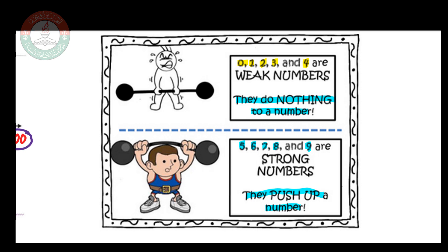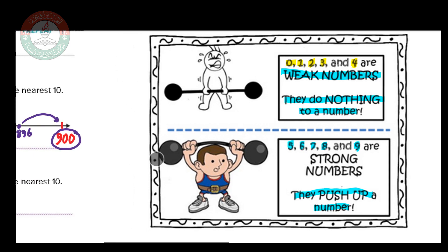To summarize: weak numbers are 0, 1, 2, 3, 4 — they do nothing. Strong numbers are 5, 6, 7, 8, 9 — they push the digit up by adding 1 to it. Now let's see how this works in practice.